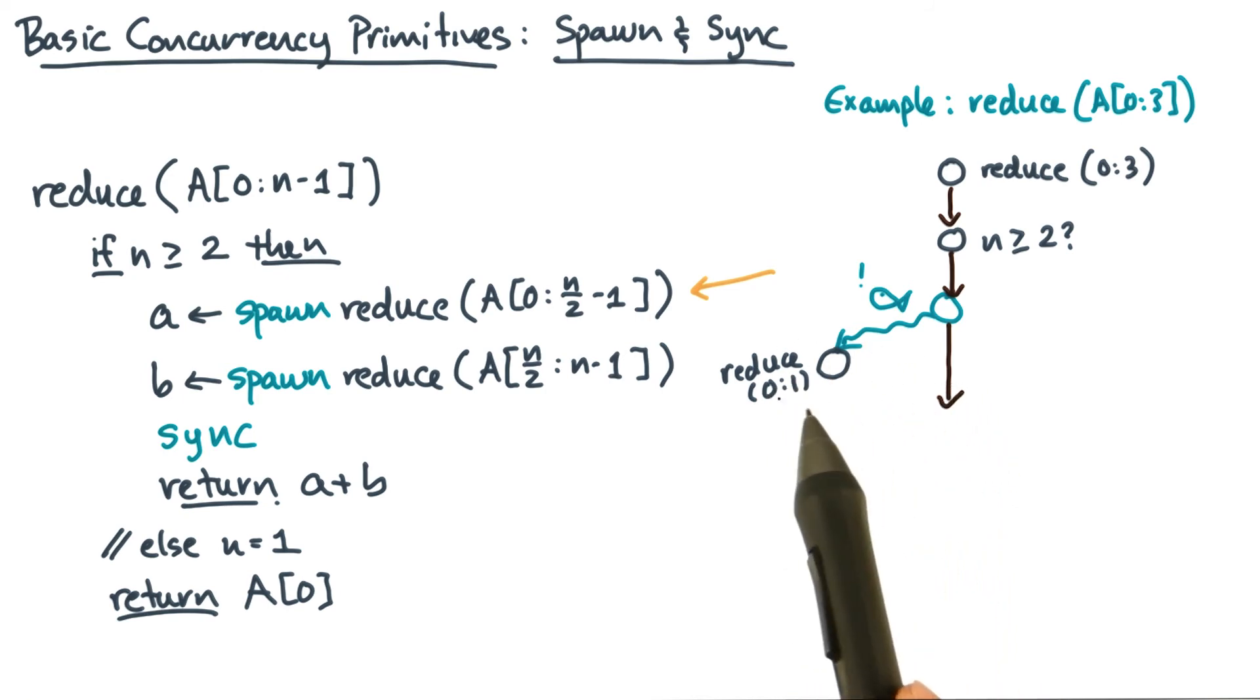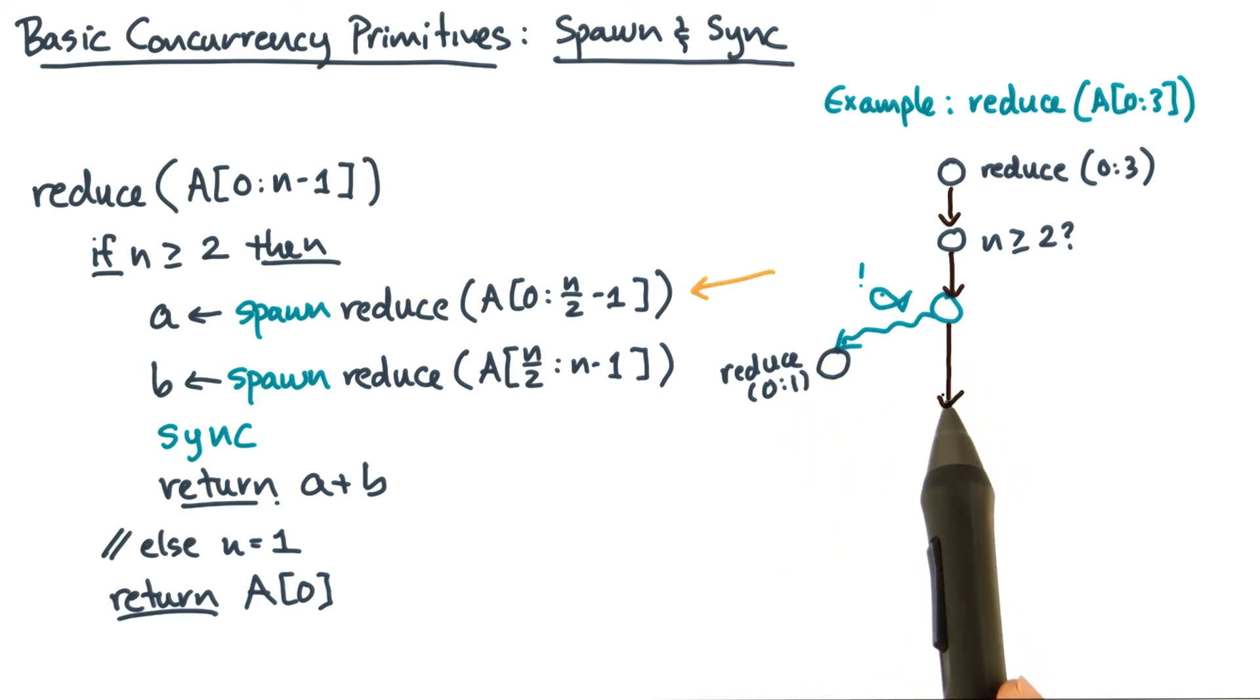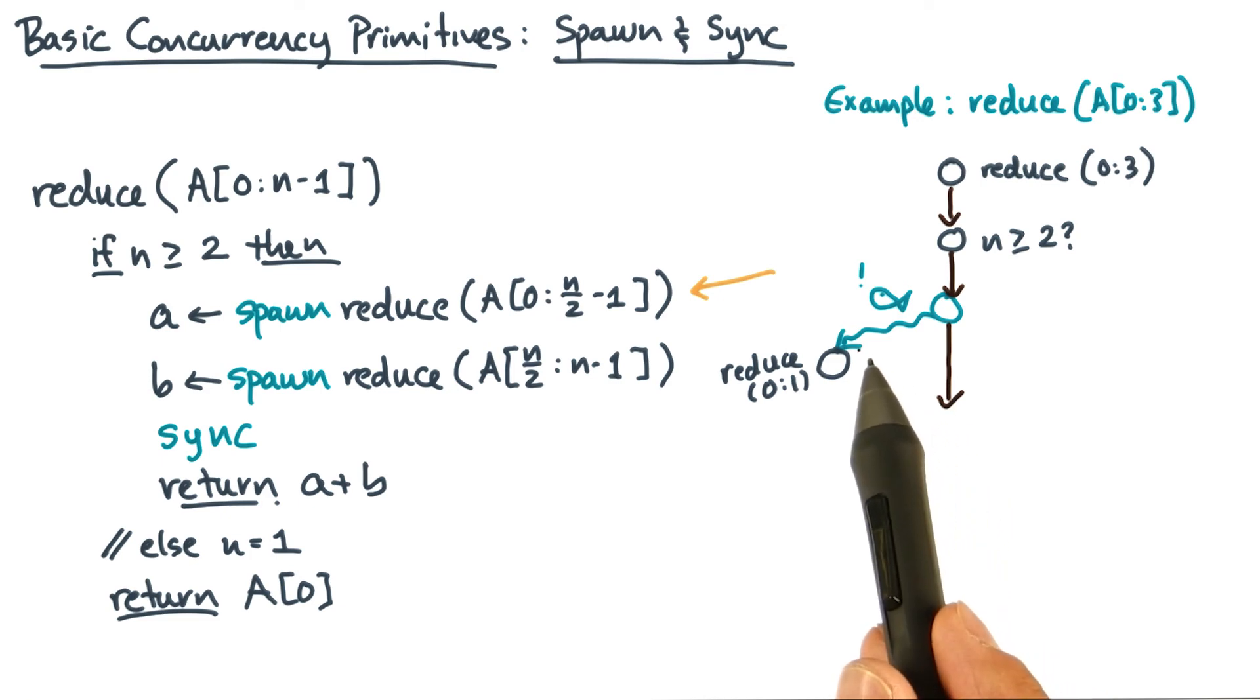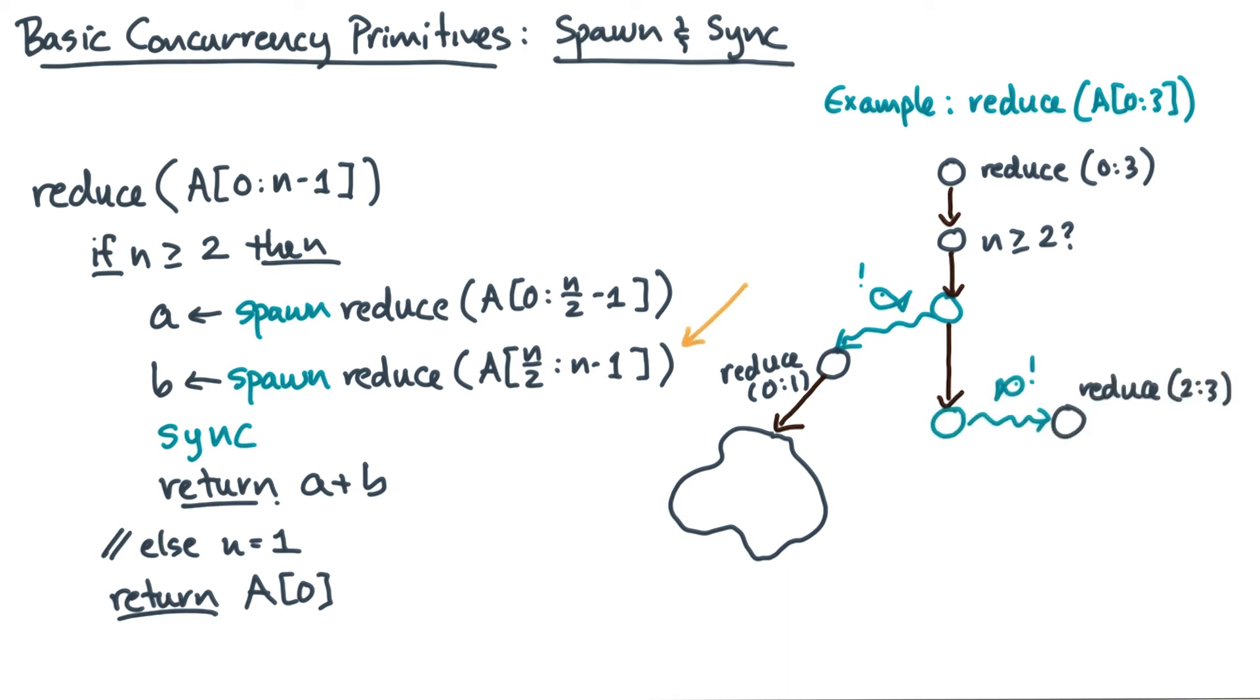One path carries the new work, and the other path is the path that continues executing immediately after the spawn. While the main path is happily going about its business, the newly spawned path is a recursive call, and therefore it has to generate its own subgraph. Now, you are traveling along the main path, and so you'll encounter the second spawn. This branching will happen again.